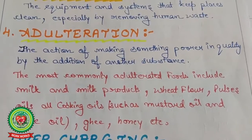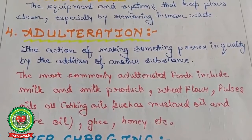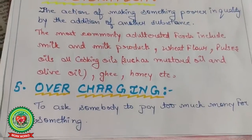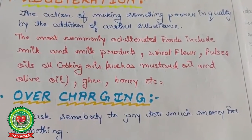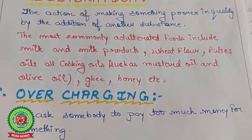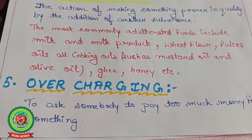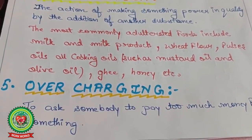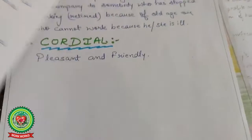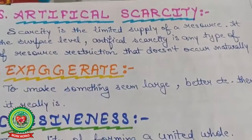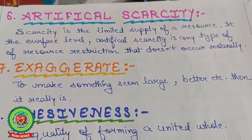Pulses, oils — all cooking oils such as mustard oil, olive oil, ghee, honey, etc. Next: overcharging — to ask somebody to pay too much money for something. When the seller charges a higher price, like MRP is 110 but the seller charges 120, that is considered overcharging. Next word: artificial scarcity — scarcity is the limited supply of resources.